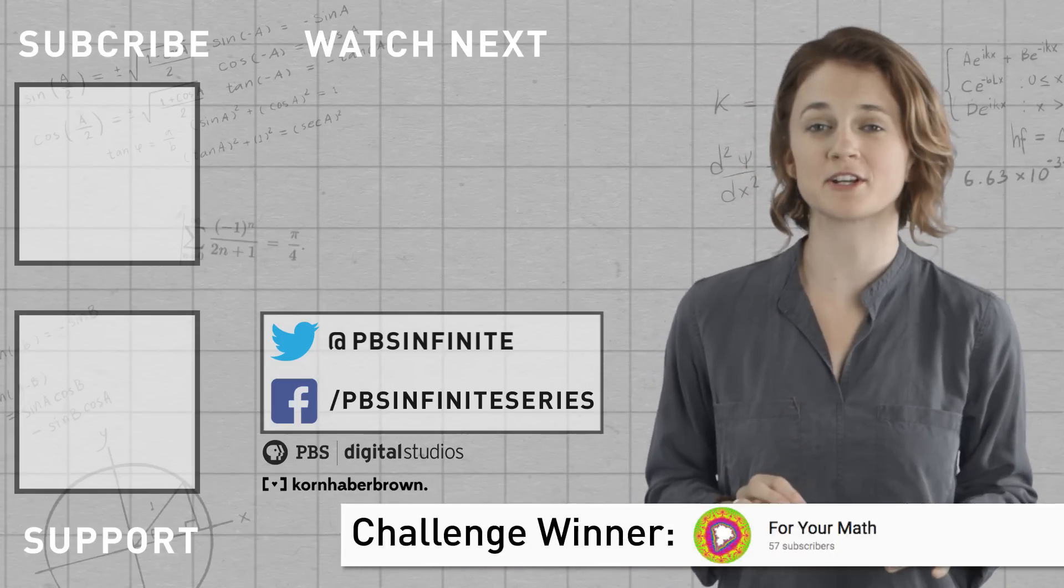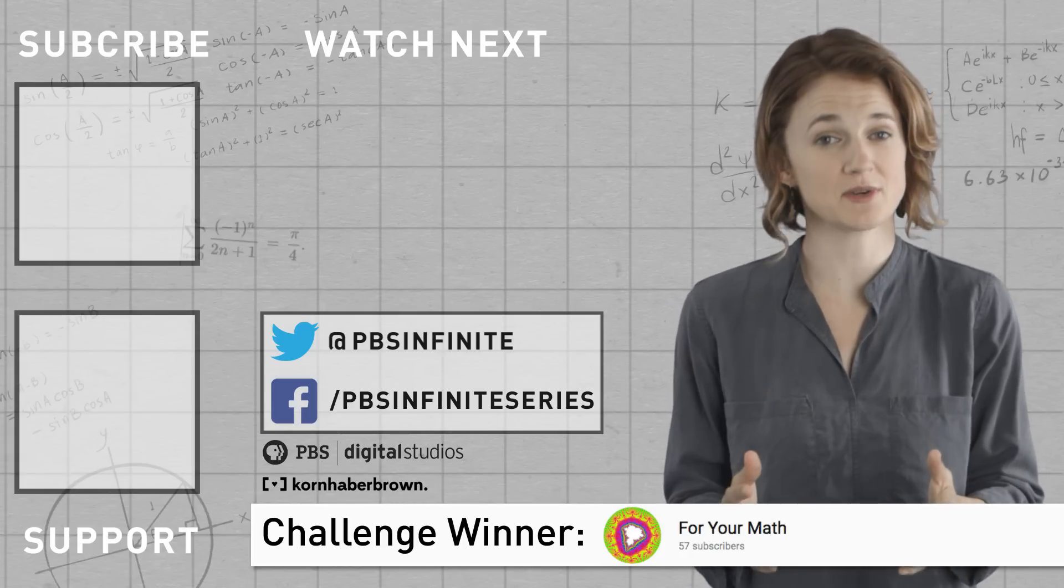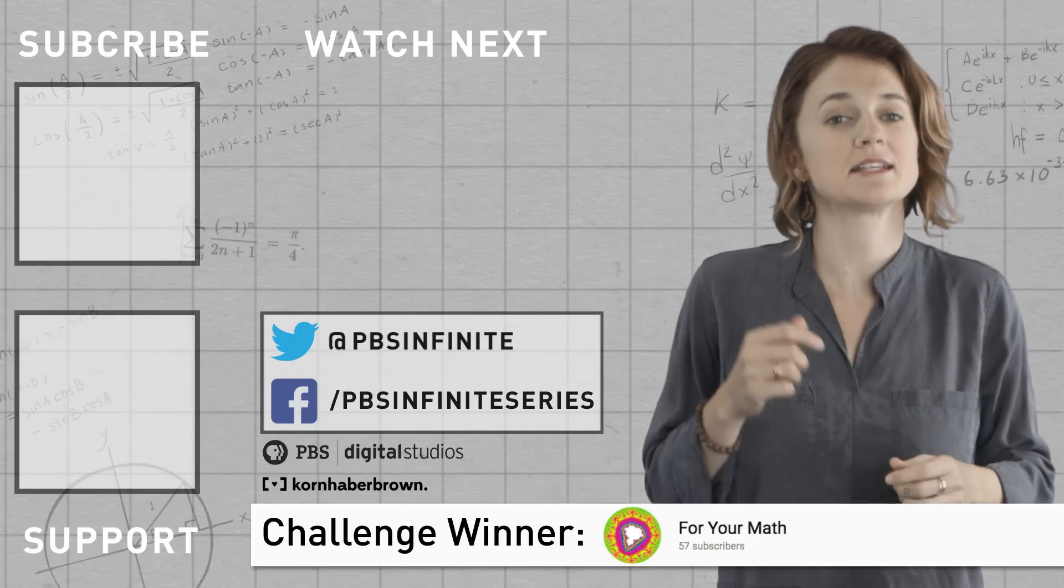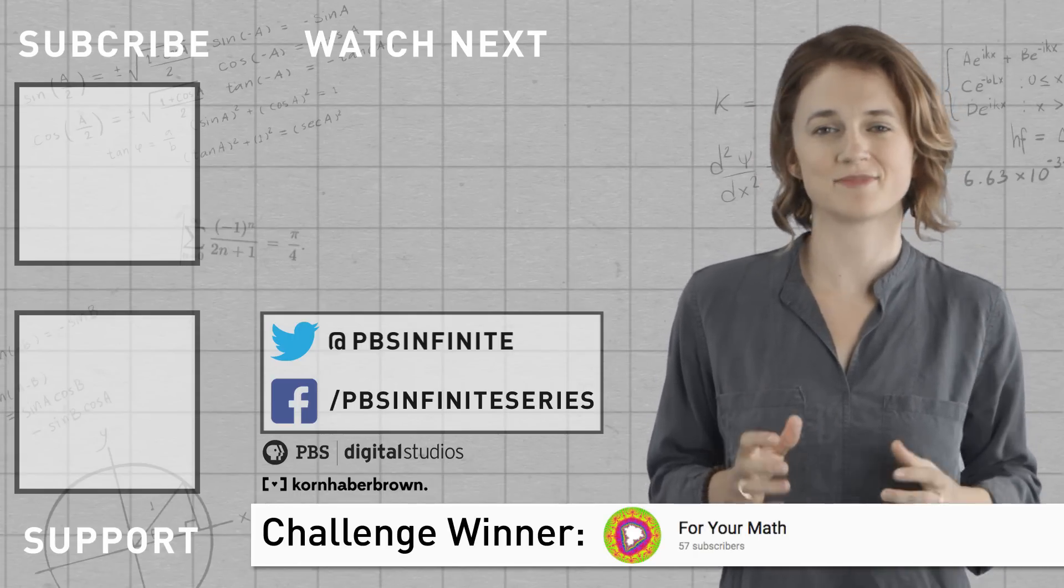Finally, our challenge winner is For Your Math, who proved that the Si and Sj are disjoint and that the union of all the Si contains the interval zero to one. Check out their comment for details. Nice job.